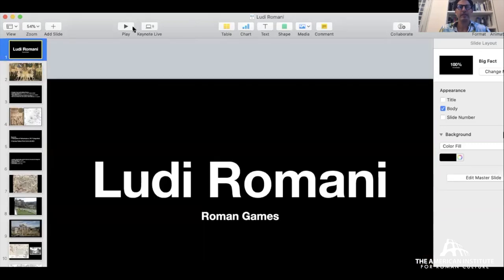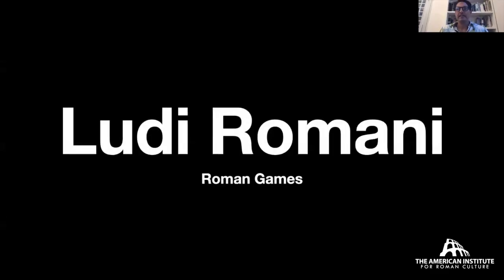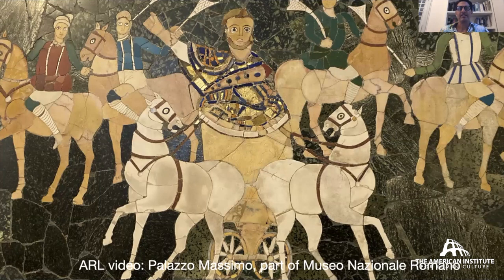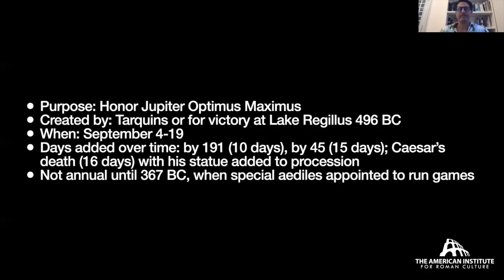Today we are talking about the Ludi Romani, the Roman Games, and we're going to look at a bunch of art. This one here is from Palazzo Massimo, which the American Institute for Culture has filmed — it's one of four museums that are part of the Museo Nazionale Romano. This particular piece dates to late antiquity from the property of Junius Bassus on the Esquiline Hill, and it figures a scene from the Circus Maximus.